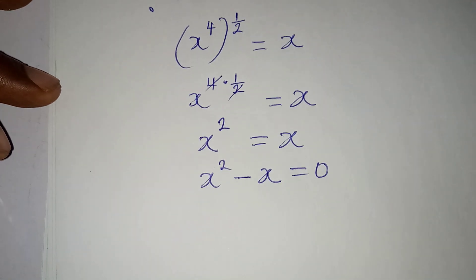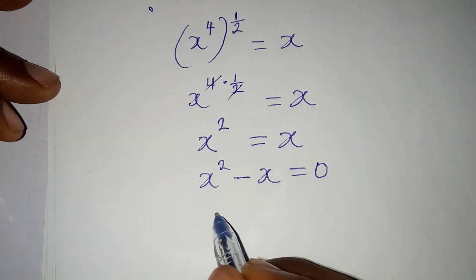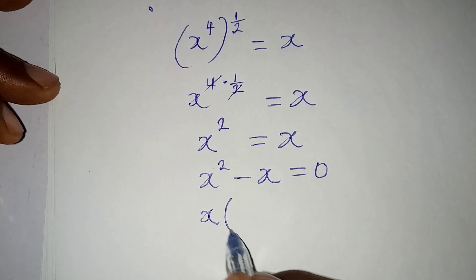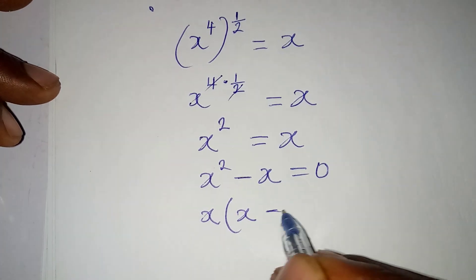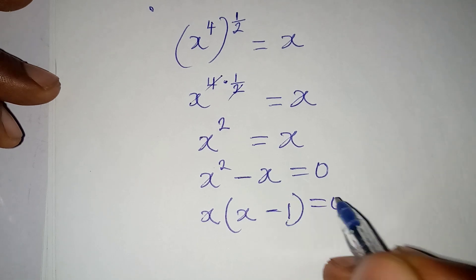Now I can apply factorization method. So I factor out x, and here I have x minus 1, which will be equal to 0.